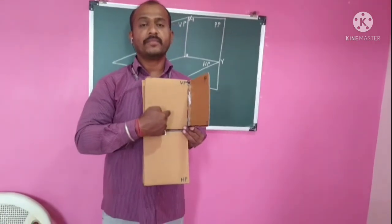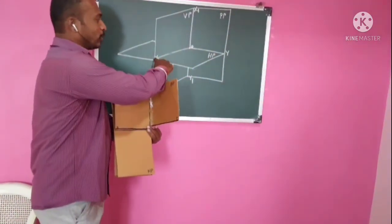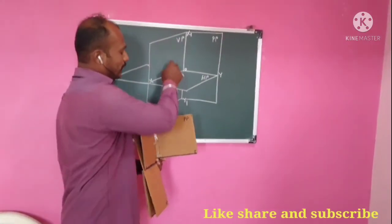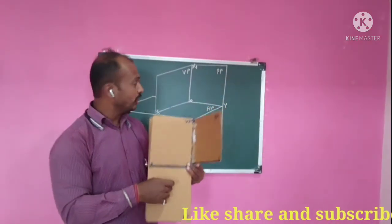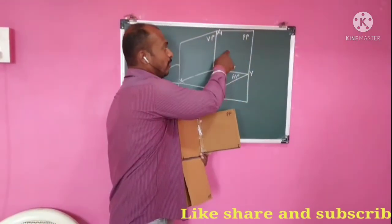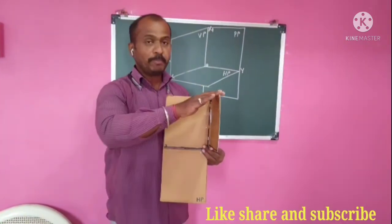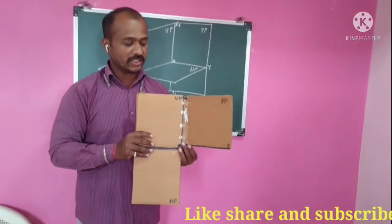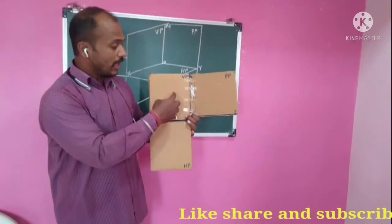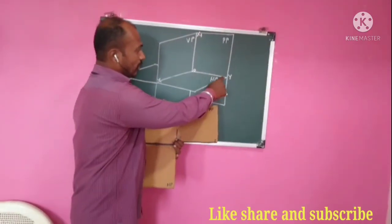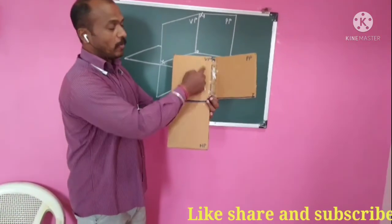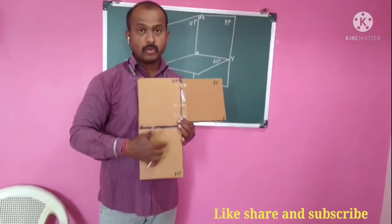After rotation, the front view will be above the XY line. The front view is drawn on VP above the XY line, and the top view is drawn on HP below it. The PP is also rotated 90 degrees clockwise, placing the side view to the side. This horizontal line is the XY line, the vertical line is X1Y1, and their intersection is the O point.